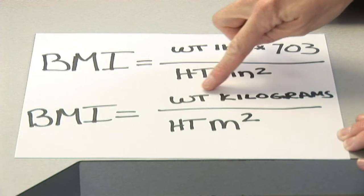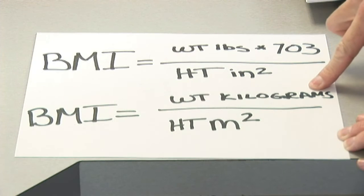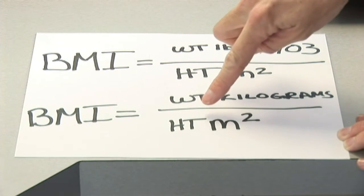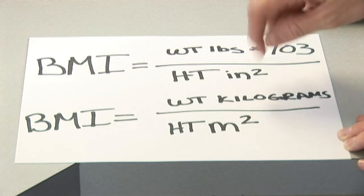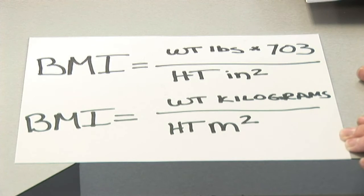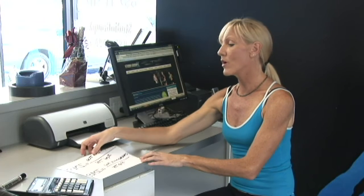Now if you're on the metric system, then you're going to take your weight in kilograms and divide it by your height in meters squared.